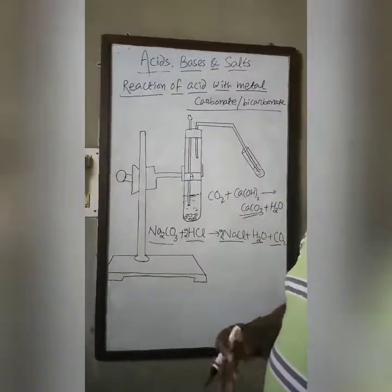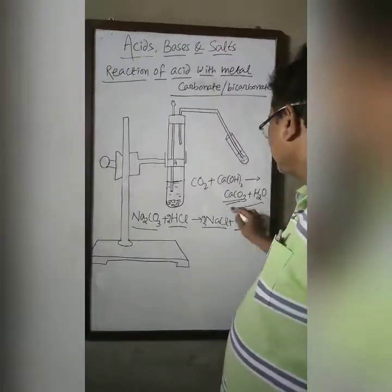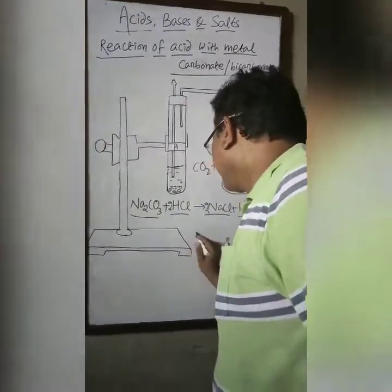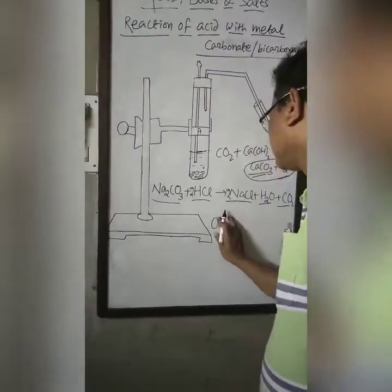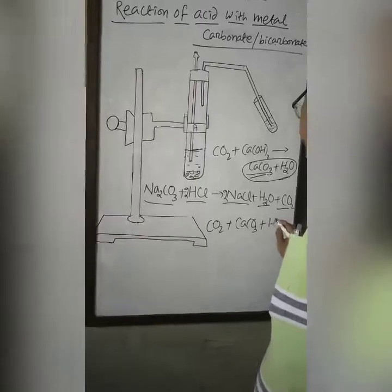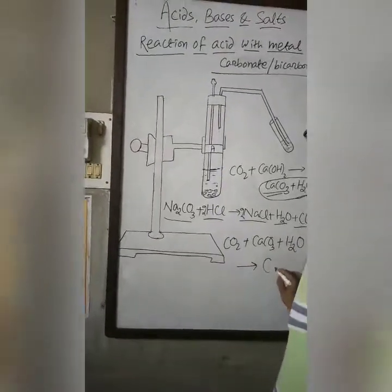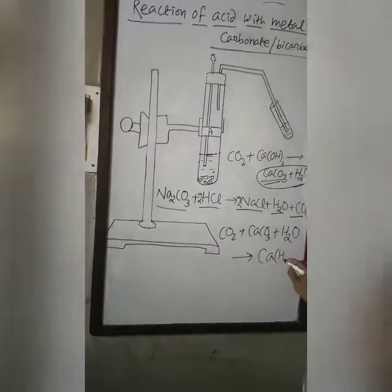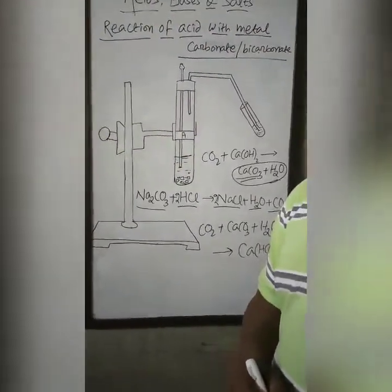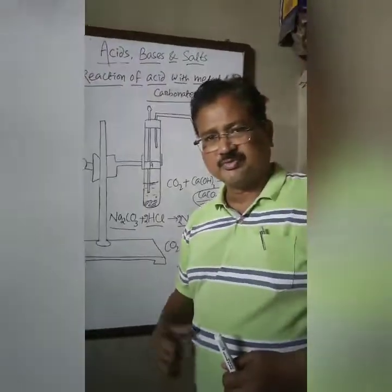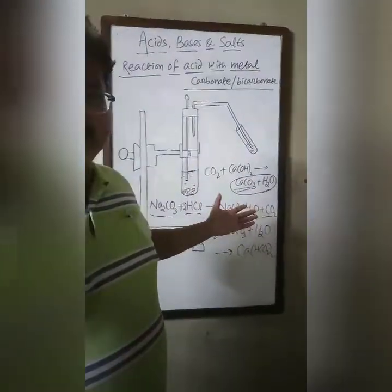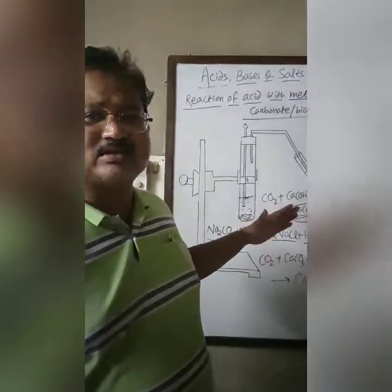If the gas is passed in excess — that means if you continue passing carbon dioxide through CaCO₃ and H₂O — then you will find a soluble product: calcium bicarbonate is produced. Since calcium bicarbonate is soluble in nature, the milkiness disappears when the gas is passed in excess.